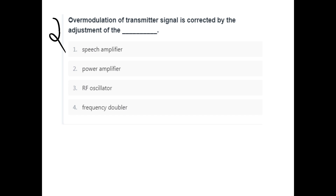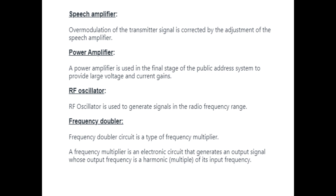Over modulation of a transmitter signal is corrected by the adjustment of the dash. Options are: speech amplifier, power amplifier, RF oscillator, frequency doubler. Question 2 answer is speech amplifier.